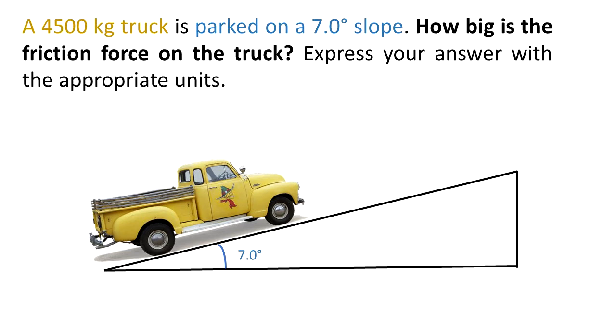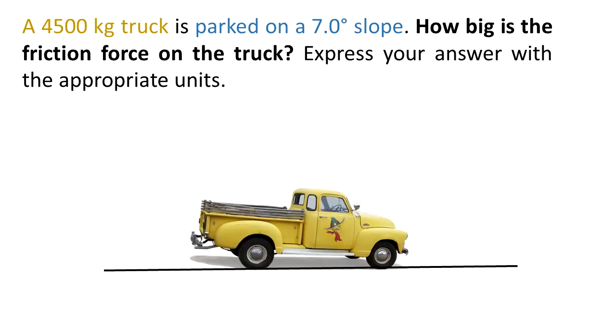But first, we are going to understand what happens if we park the truck on a flat surface. In this case, if the truck is at slope 0, Mg is going downwards and Fn, that's the support force, is going upwards.